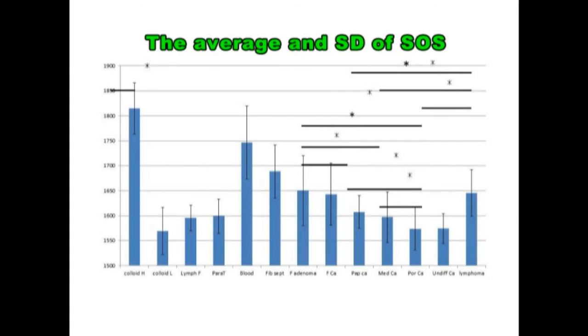This is the average and standard deviation of speed of sound in thyroid regions. Speed of sound data of the thyroid regions are presented as average and SD. Student t-tests were used to determine statistically significant differences among the specimens.